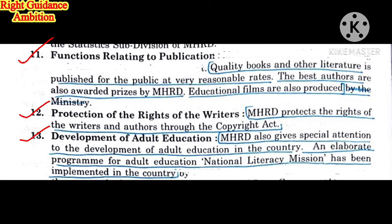The thirteenth point is the development of adult education in the country. An elaborate program — the National Literacy Mission — has been implemented by the MHRD department for adult education in India. Since 30 to 40% of the population are adults who couldn't complete their education, the MHRD started the National Literacy Mission specifically to help them complete their education and contribute to national development.